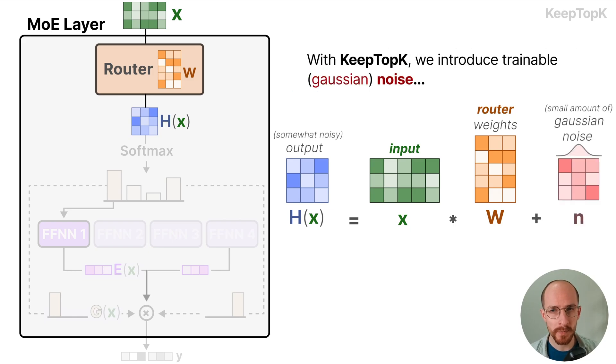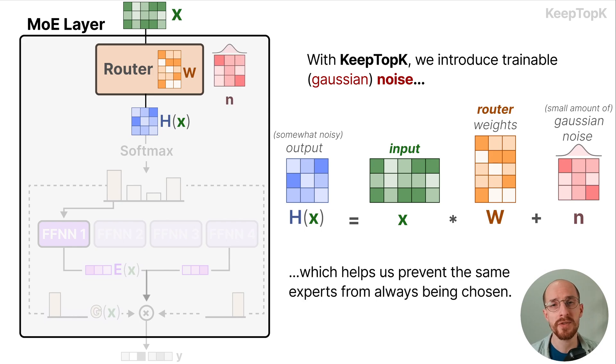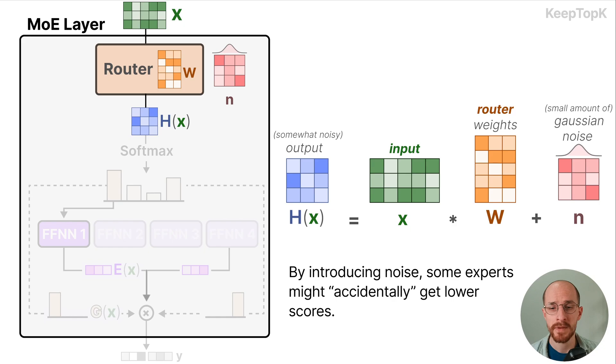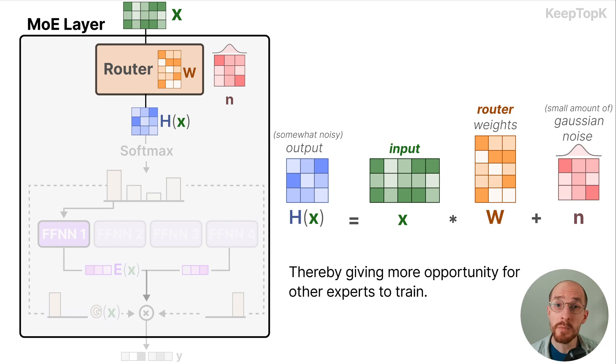With keep top k we introduce trainable Gaussian noise which helps us prevent the same experts from always being chosen. By introducing noise some experts might accidentally get lower scores, thereby giving more opportunity for other experts to train.